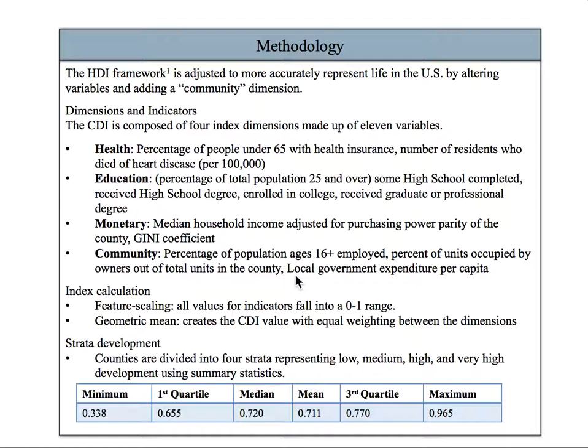Economic status is crucial in understanding overall development. The CDI also includes a fourth community dimension, which is composed of local government expenditure, percent of homes owned versus those rented, and percentage of employed citizens.